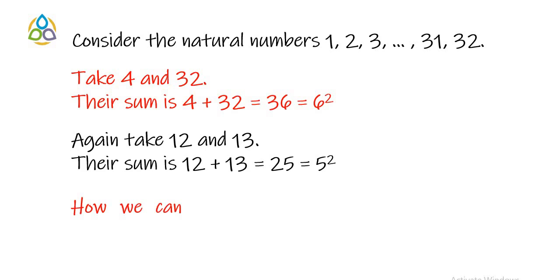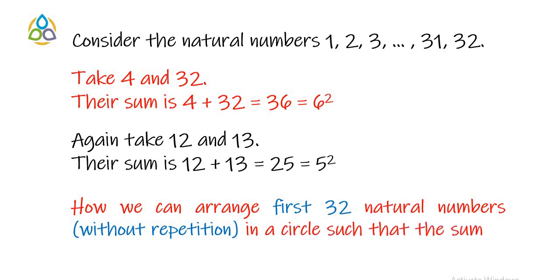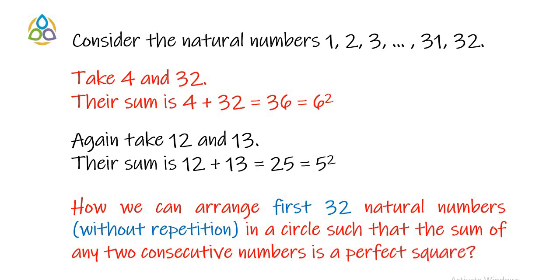The problem that we will consider in this video is how we can arrange first 32 natural numbers without repetition in a circle such that the sum of any two consecutive numbers is a perfect square.